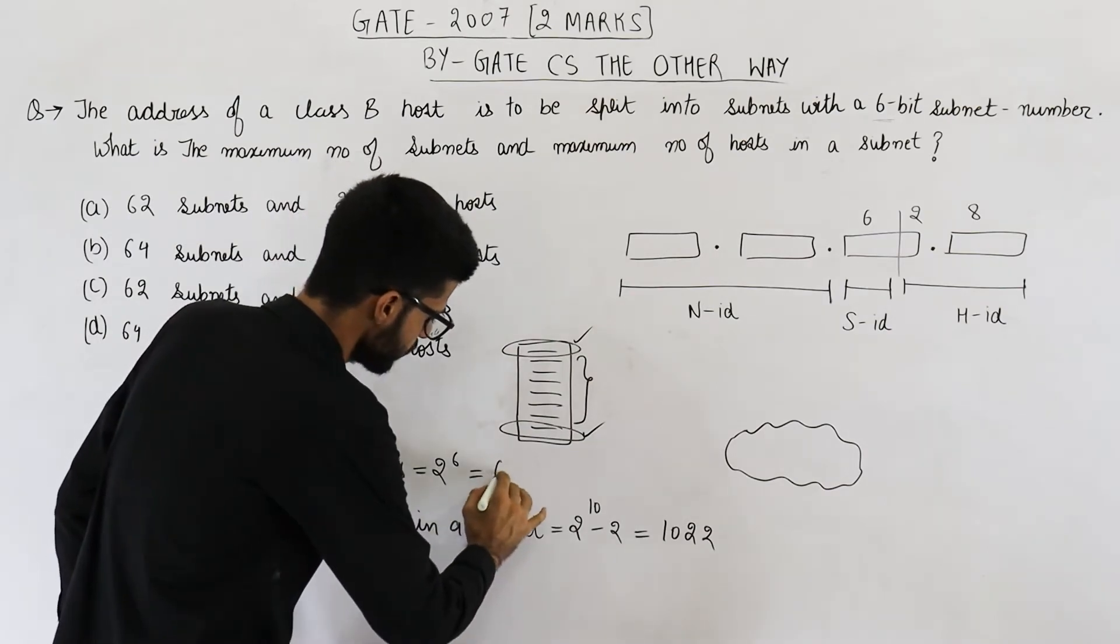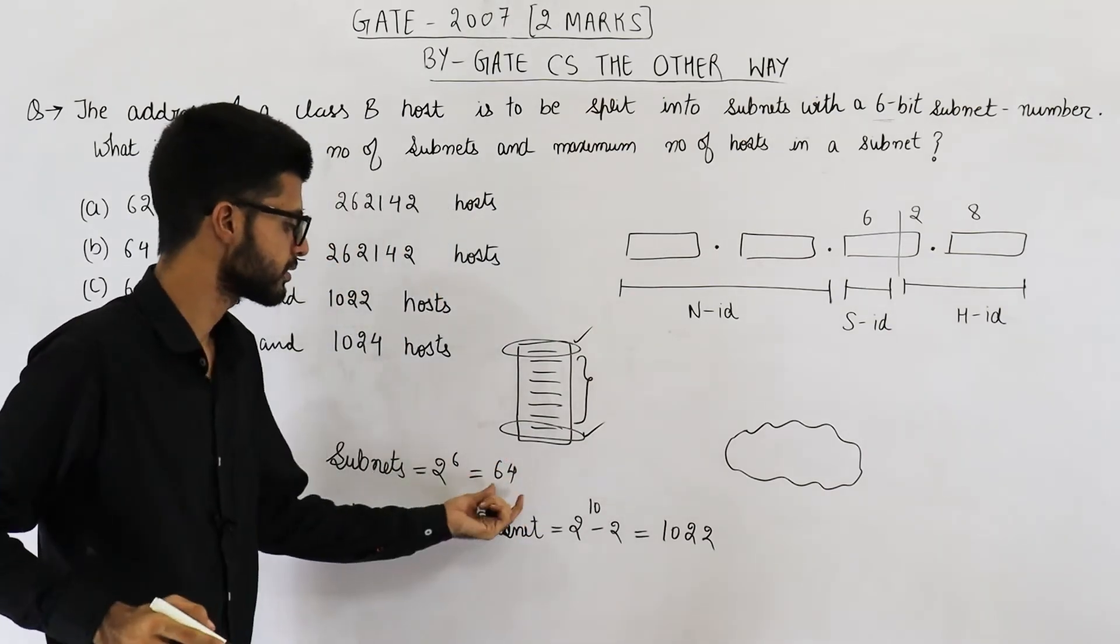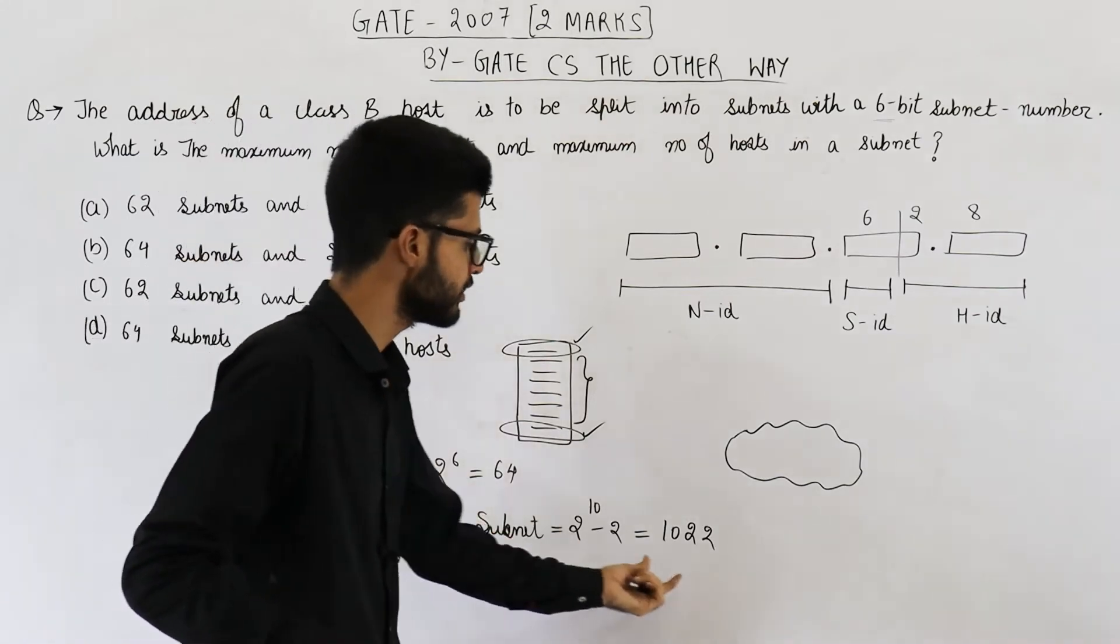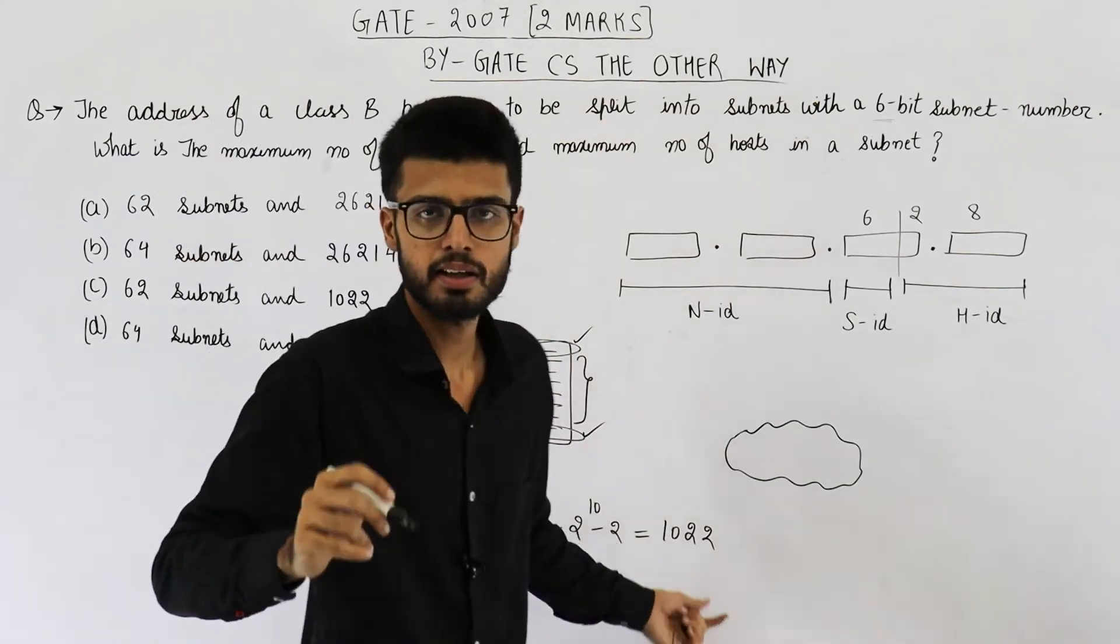So this is 1024 minus 2 that is 1022. And this is going to be 64. So the answer is 64 subnets are possible. And these many hosts can be configured in one subnet.